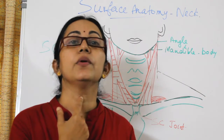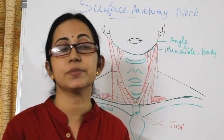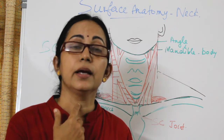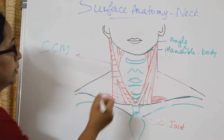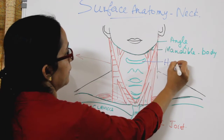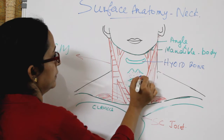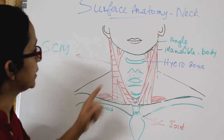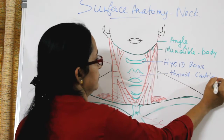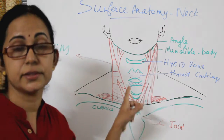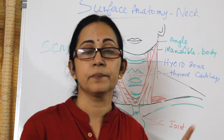After these bony structures, you can palpate an important prominence in the neck. This prominence is more prominent in males and less prominent in females — it is the Adam's apple. This moves with deglutition. Above it, another important landmark is the hyoid bone. The Adam's apple prominence is the thyroid cartilage, and these structures are all described in detail in the anatomy of the larynx.